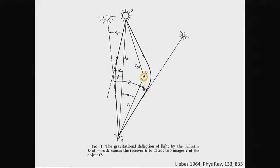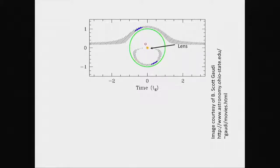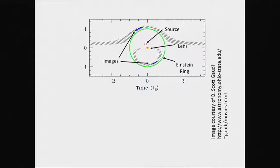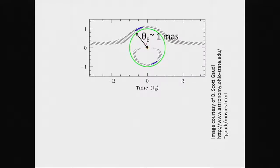In microlensing, we have a lens mass, and we look out through the galaxy and see a source star in projection behind this lens mass. The light from that source star gets bent and split into multiple images. The Einstein ring sets the fundamental scale of microlensing. For stellar lensing — two stars within our own galaxy — the Einstein ring has a radius of about one milliarcsecond. To observe microlensing at all, you need two stars kiloparsecs apart to have a chance conjunction better than one milliarcsecond.